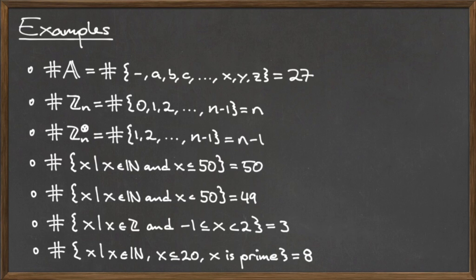The set Z mod n contains all of the integers starting at 0 up to n minus 1. There are n elements in this set, so the cardinality of Z mod n is n.